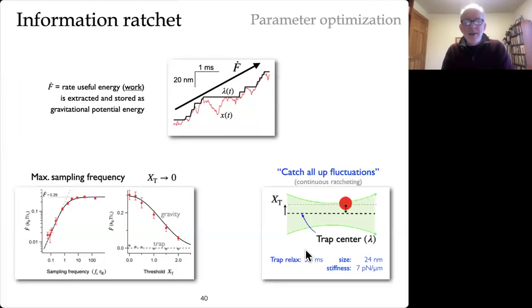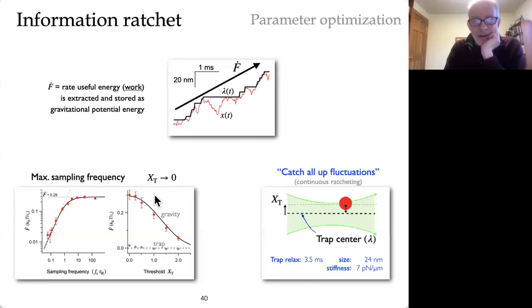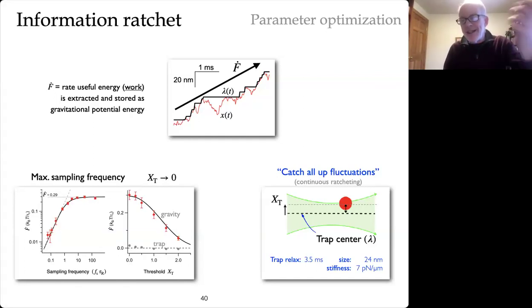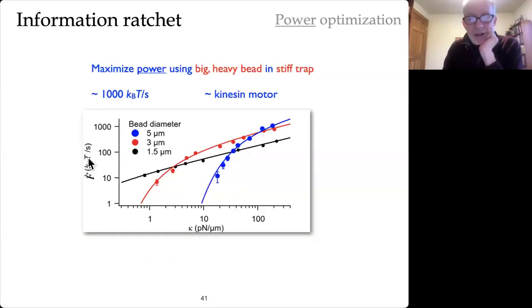And so we played around a lot with all the parameters, like this threshold. It turns out you want to set it so that the moment it starts compressing the spring, you ratchet up, so you're catching all the up fluctuations. And you also want to look at it as often as you can, in the sense that you might think, does it pay to wait for a rare large fluctuation and act on that big fluctuation? And it turns out, no, you're better off just taking every little thing you can as quickly as you see it.